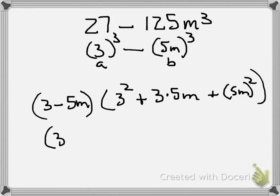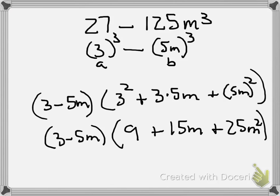So 3 subtract 5m, because we can't do anything else. 3 squared is 9, plus 3 times 5m is 15m. 5m squared is 25m squared, and now you have simplified, found the sum of two cubes and the difference of two cubes.